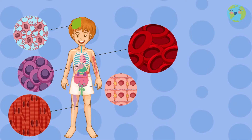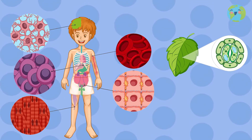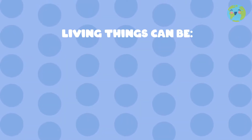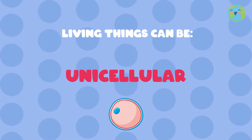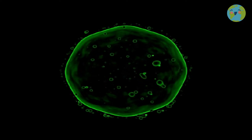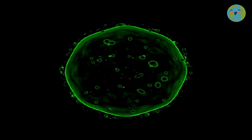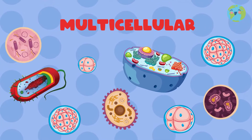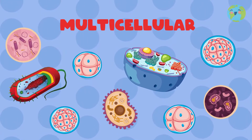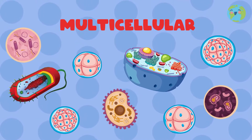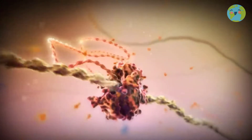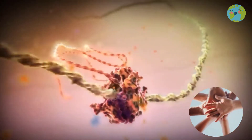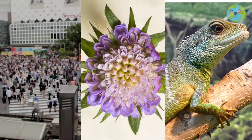All living organisms in the world are made up of cells. Living things can be unicellular, if they only have one single cell, like this microscopic bacterium that lives in our stomach. Or they can be multicellular, if they have millions of cells that cannot live in isolation — each cell performs a specific task, and all work as a team to ensure the organism survives, like humans, plants, and animals.